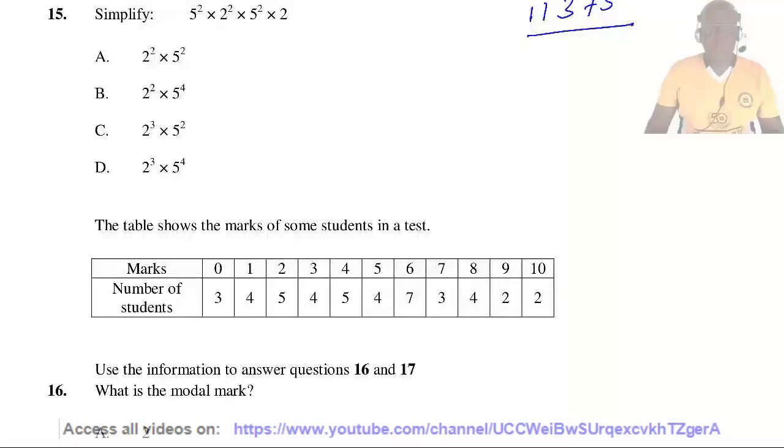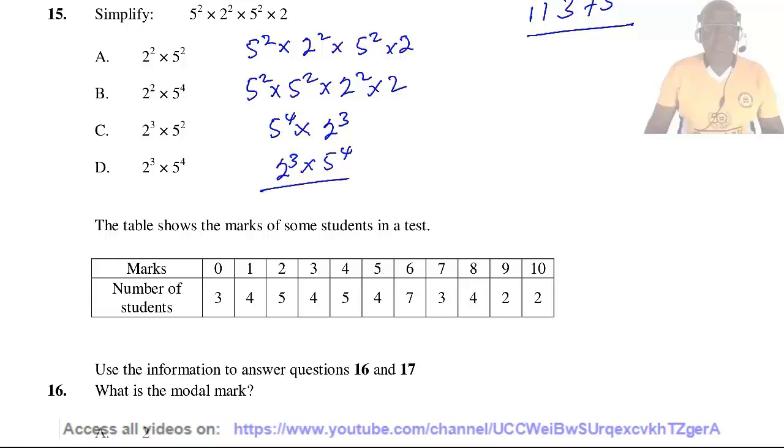Question 15. Simplify 5² × 2² × 5² × 2. This can be written as 5² × 5² times 2² × 2. 5² times 5² is 5⁴, and 2² times 2 is 2³. This is the same as 2³ × 5⁴. So the answer is D.